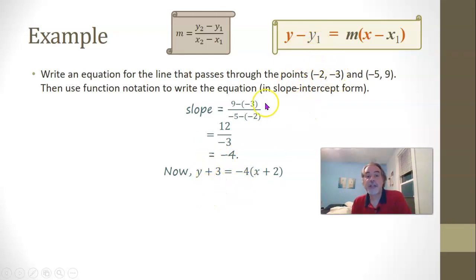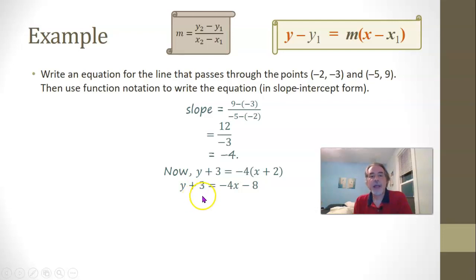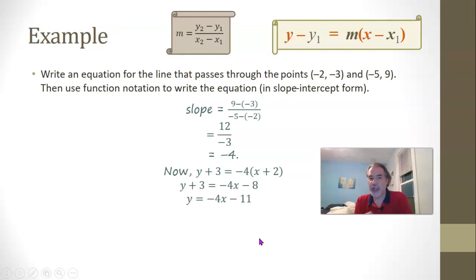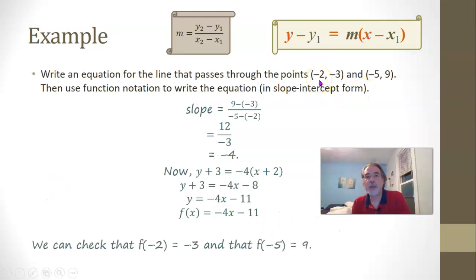Putting negative 4 in for m, and using negative 2 for x1 and negative 3 for y1 — writing minus a negative as plus a positive — gives y plus 3 equals negative 4 times x plus 2. Without the parentheses: y plus 3 equals negative 4x minus 8. Subtracting 3 from both sides: y equals negative 4x minus 11. In function notation, f of x equals negative 4x minus 11. You can check that f of negative 2 equals negative 3 and f of negative 5 equals 9.